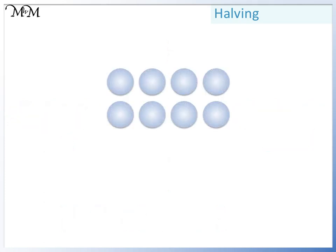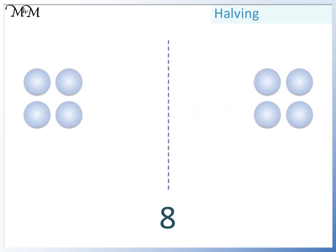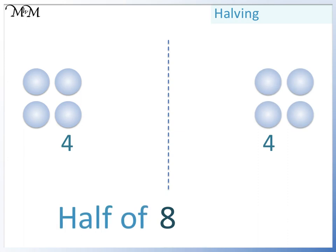Here we have eight counters. To halve them we divide them into two equal parts. We have four counters on the left and four counters on the right. So half of eight is four.